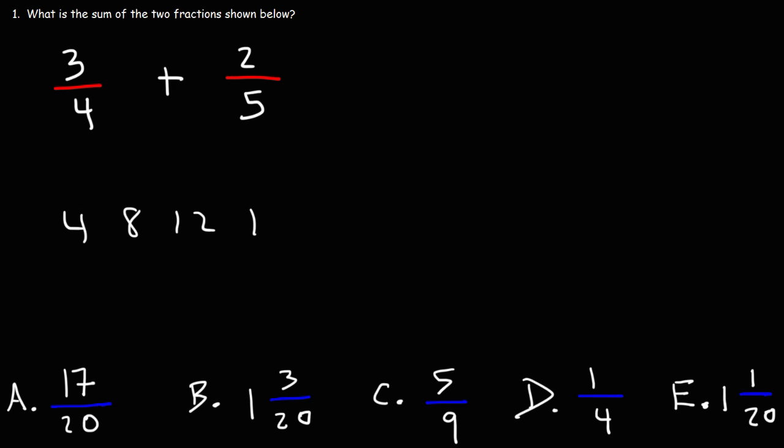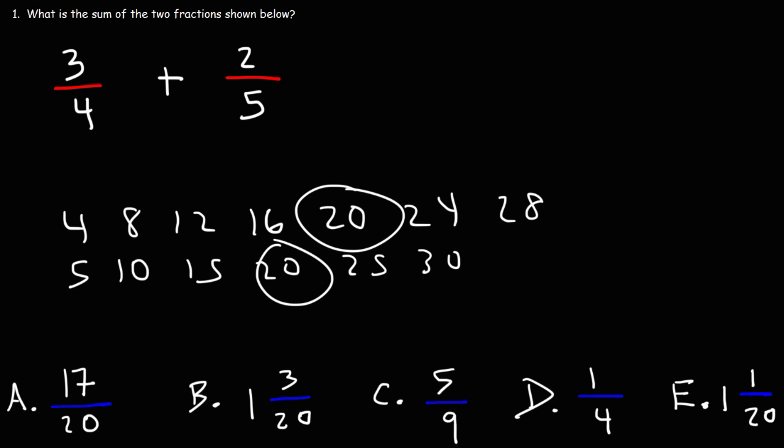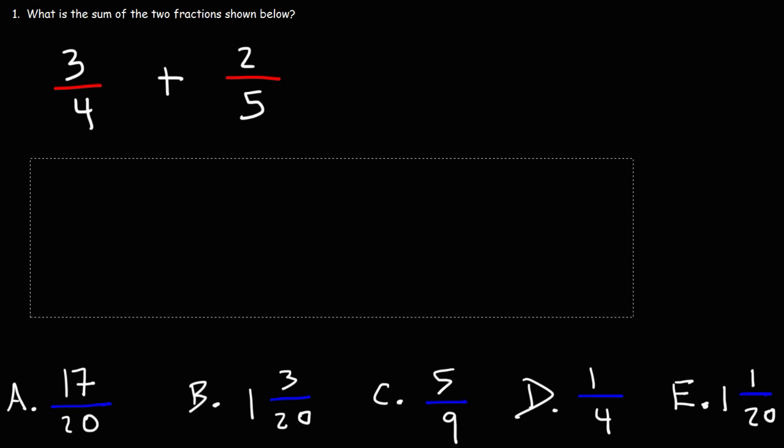If you add 4 continuously, you'll get these numbers. And if you add 5 to each previous number, you'll get this. 20 is the least common multiple of 4 and 5. You can also get it by just multiplying 4 and 5 together. So what we're going to do is multiply the second fraction by 4 over 4 and the first one by 5 over 5.